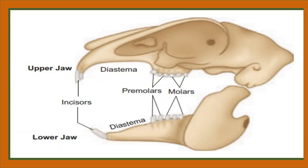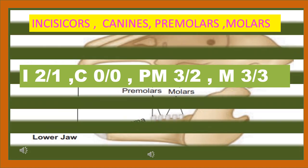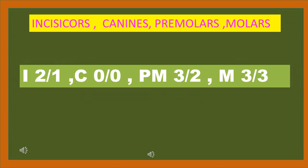Next we learn the dentition of rabbit. Dentition is the arrangement of teeth in jaws, represented by a simple formula called the dental formula. It is a simple method of representing the teeth of a mammal. The number of each kind of tooth in the upper and lower jaws on one side is counted. For example, incisors (I): there are two incisors in the upper jaw and one in the lower jaw, so I is written as 2/1.